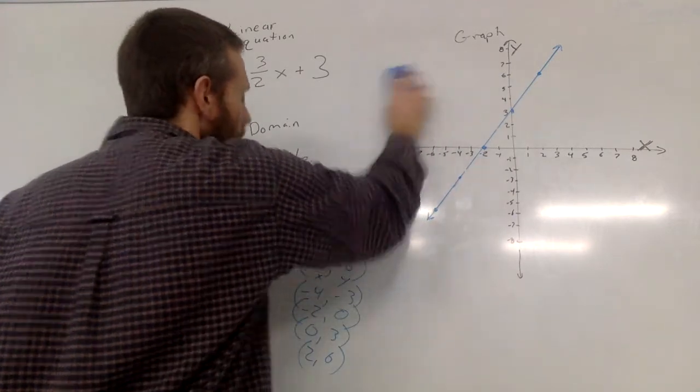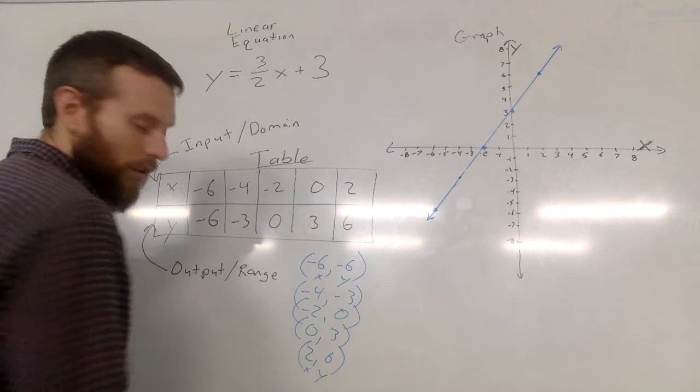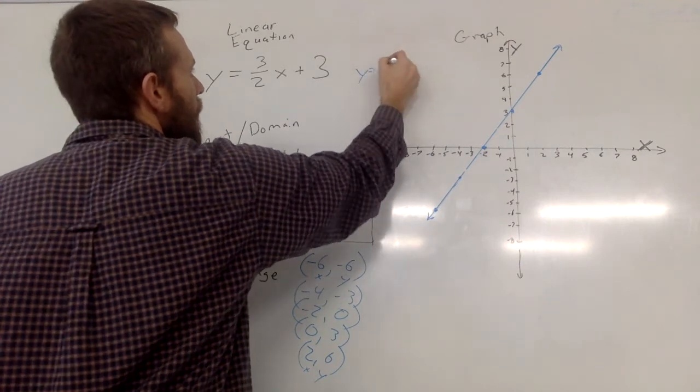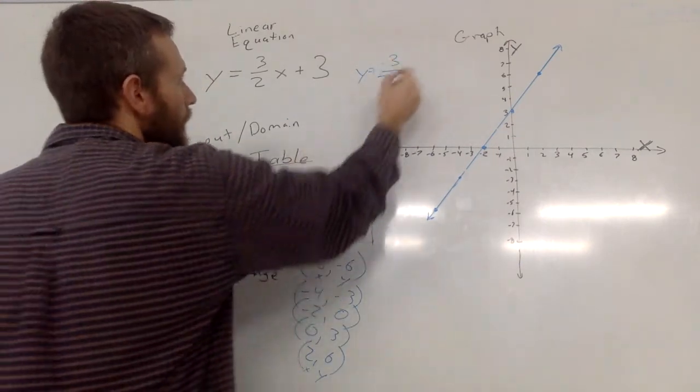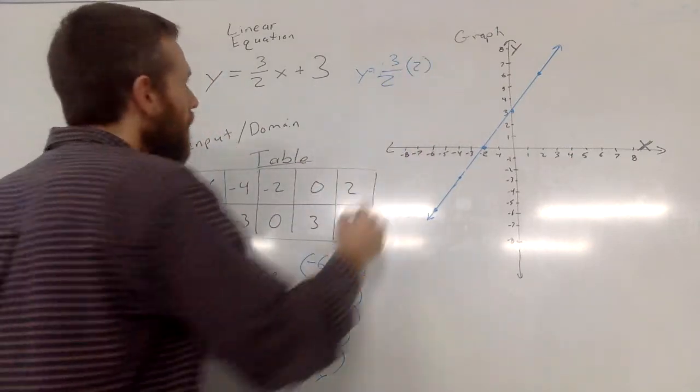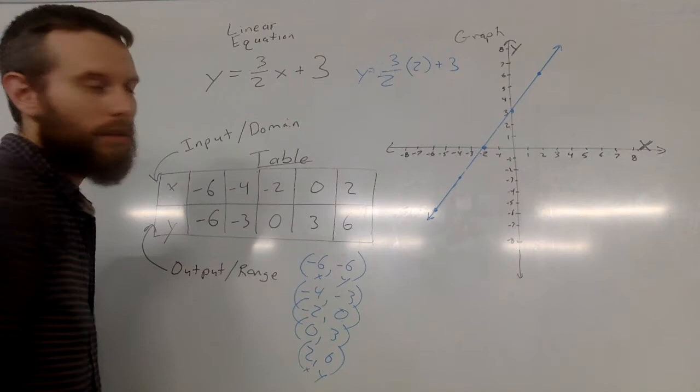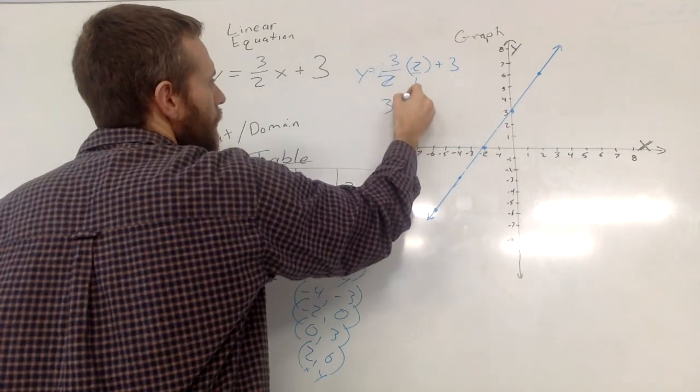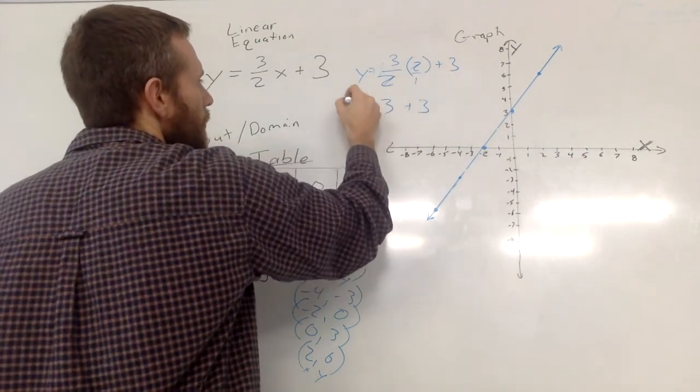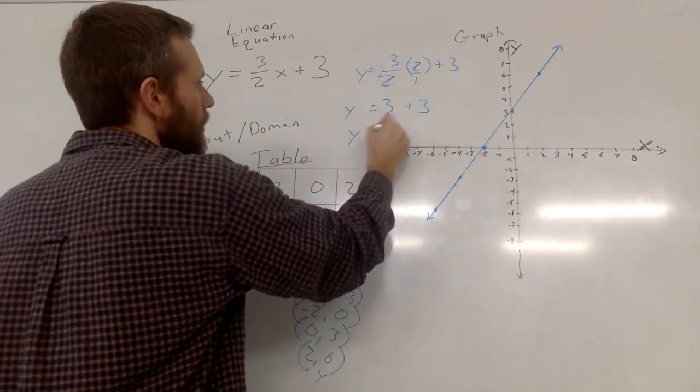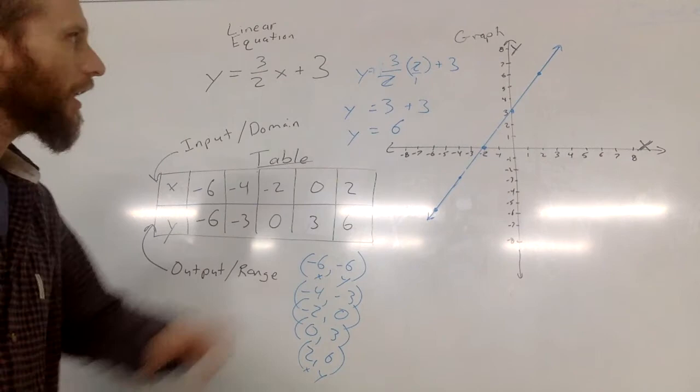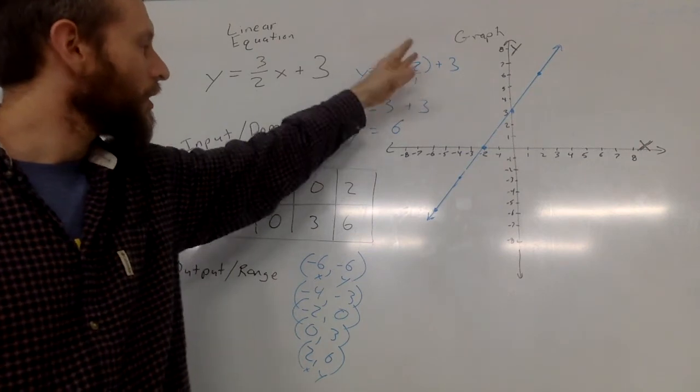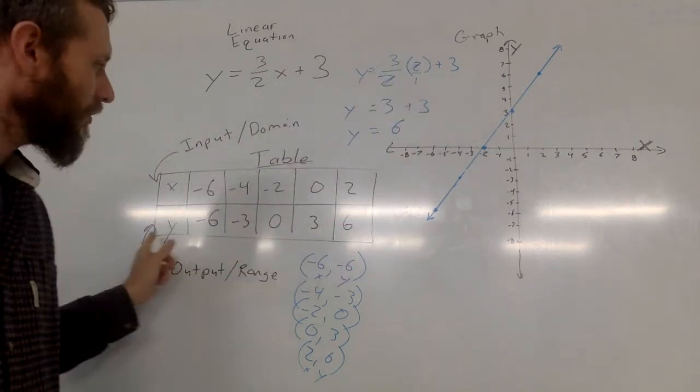And we can try one more. Let's try if x is 2, what is y going to be? Well, y equals 3 over 2. And we say we're going to substitute x with the number 2 plus 3. So we know that 3 halves times 2, 2 is 2 over 1, 2's canceling, so we get 3 plus this 3 equals y, and then y equals 6. So we've just seen that if x is 2, if x is our input 2, and we solve, our output will be 6 for y.